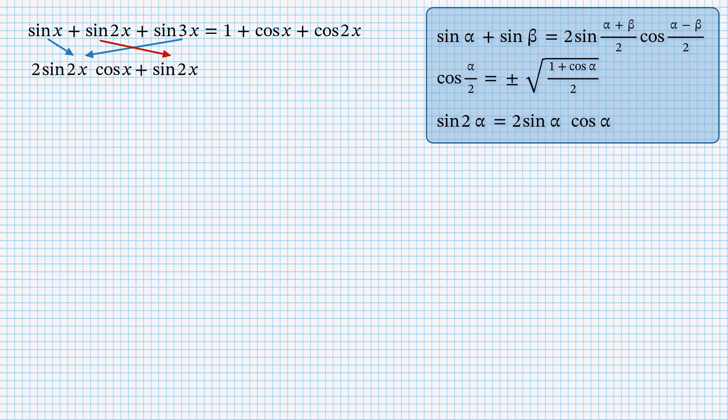In the right hand side we also group the first and the last terms. This time we use the identity for cosine of half of alpha, from where we can find the expression for 1 plus cosine of alpha. In the obtained equality we substitute 2x for alpha and find that 1 plus cosine of 2x equals 2 cosine squared of x. And again we copy the remaining term.